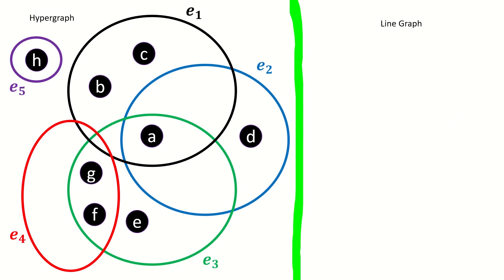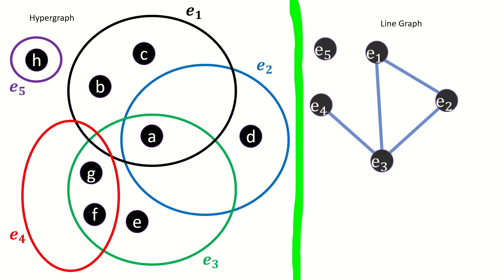To demonstrate this theorem, we'll construct the transversal from a line graph clique covering, and then we'll construct a clique covering in the line graph from a transversal. Let's use this heli hypergraph together with its line graph. We're going to use the clique covering defined here, which only uses maximal cliques.